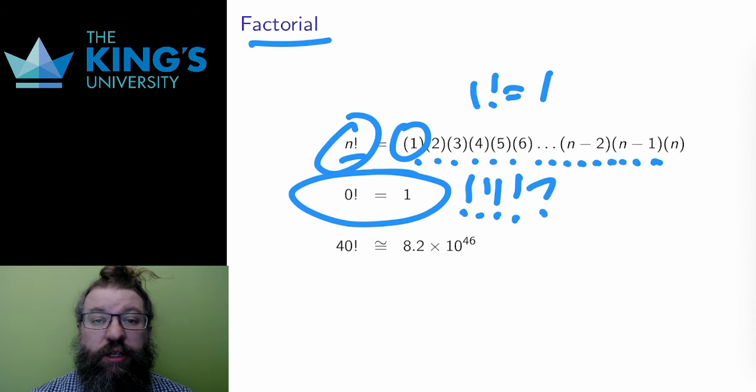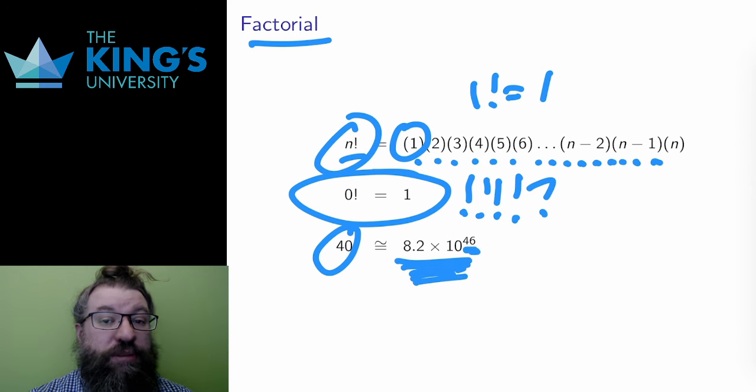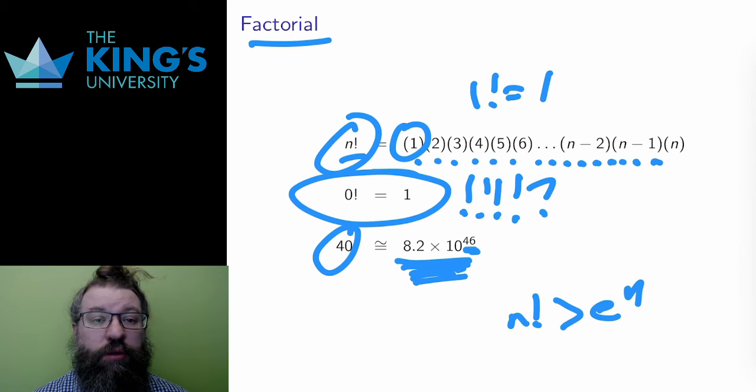The factorial grows very quickly, unsurprisingly, since it involves multiplying many things together. For example, 40 factorial is already a number some 46 digits long. Asymptotically, the factorial grows even faster than the exponential, and this is useful for determining limits involving the factorial.